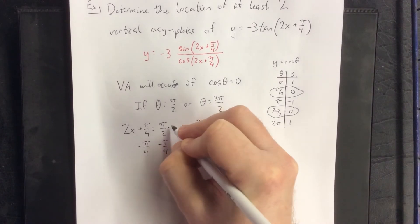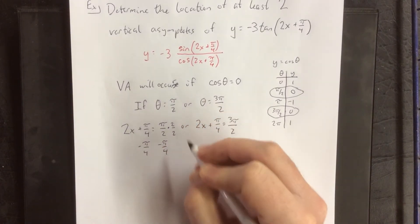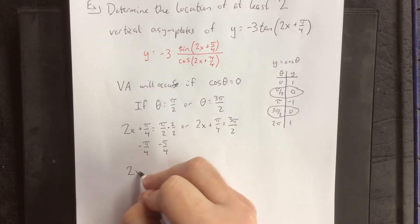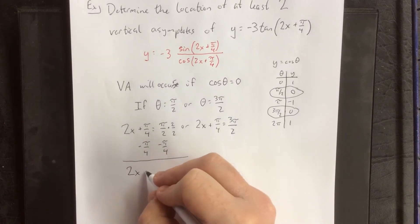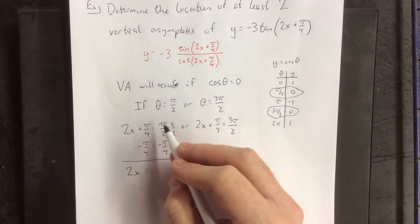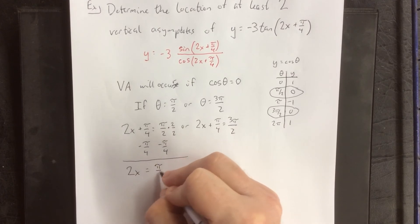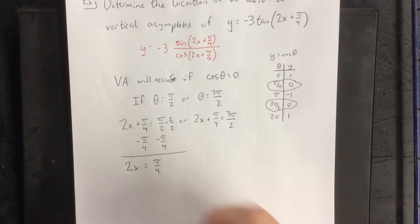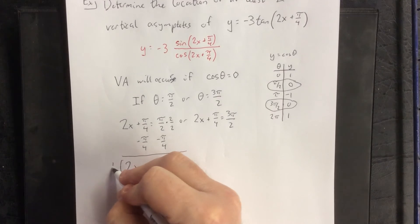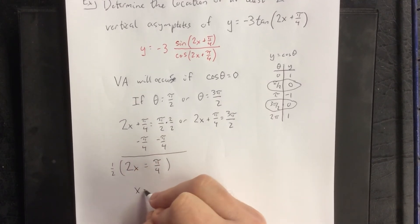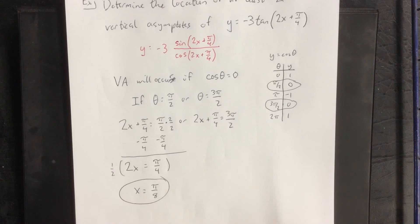A common denominator will be necessary, so we'll multiply this pi over 2 by 2 over 2. This would be 2 pi over 4 minus pi over 4. That'll be pi over 4. Then we multiply both sides by 1 half, and we get x is equal to pi over 8. That will be one of our vertical asymptotes.